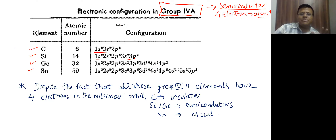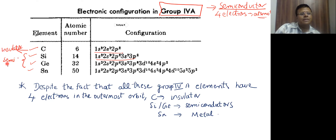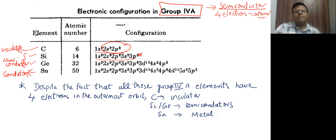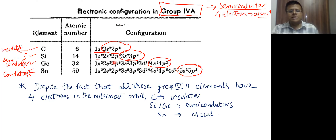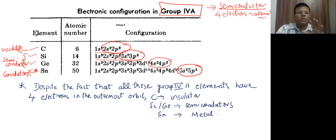Despite having the similar feature of four electrons in the outermost orbit, we see that carbon behaves like an insulator, silicon and germanium behave like semiconductors, and tin behaves like a conductor. Though they all share four electrons in the outermost orbit, one behaves like an insulator, two behave like semiconductors, and one behaves like a conductor. What is the reason for that? That is the main discussion. In terms of the energy level diagram, we will be able to answer this question.